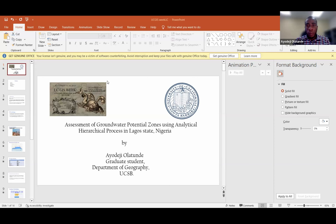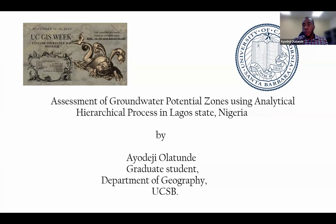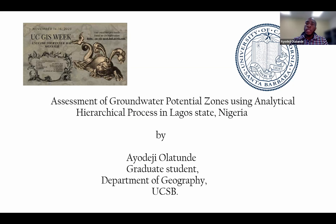The next presenter introduced themselves: My name is Ayodeji Olatunde. I'm a first-year grad student from the University of California, Santa Barbara, working with Professor Leda on groundwater potential zones in California. The research I'll be presenting today is work I did when I was in Nigeria during my graduate internship in Lagos State, Nigeria, where I used the Analytical Hierarchy Process to assess the groundwater potential zones in Lagos State, Nigeria.